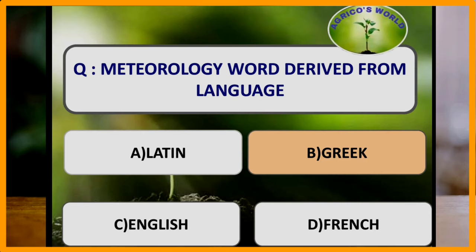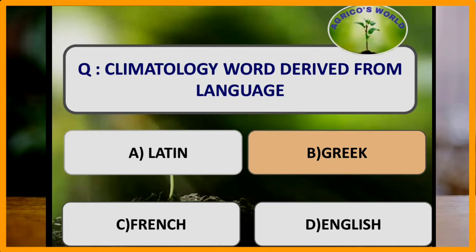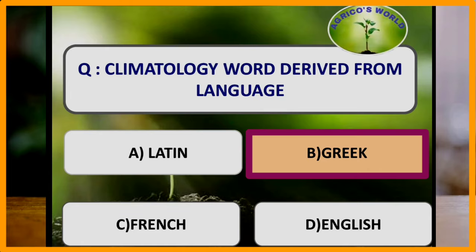Here we are with our first question. Meteorology word is derived from which language? Meteorology word is derived from Greek language. Climatology word is derived from which language? Climatology word is derived from Greek language. Here we have to remember that any word ending with 'logi' is derived from Greek language.